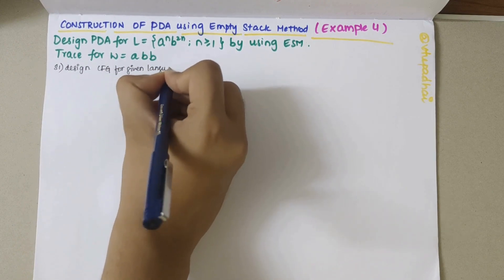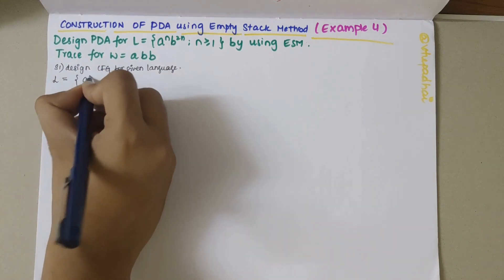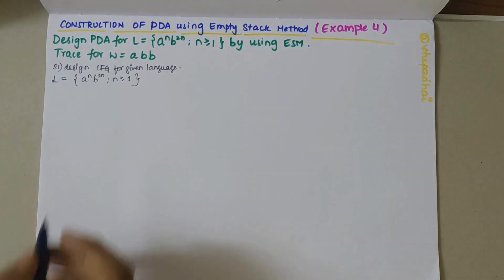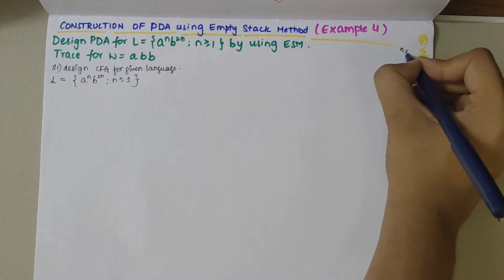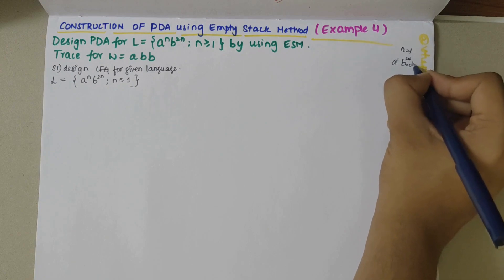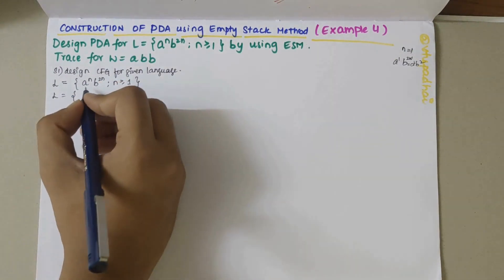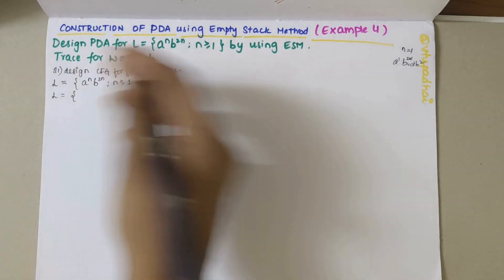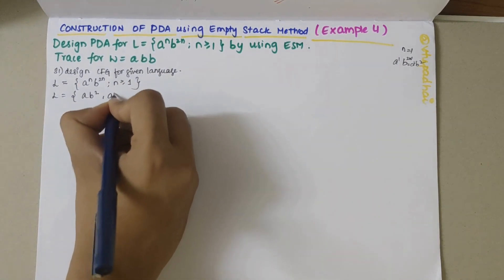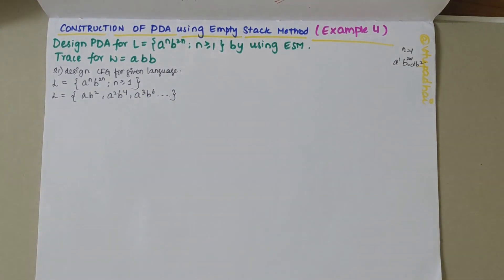The language is L equals a^n b^(2n) where n is greater than or equal to 1. If I take n equals 1, then a should be 1 and b should be 2 times 1, that is a^1 b^2. The elaborated language with all possible strings would be: ab², a²b⁴, a³b⁶, and so on.